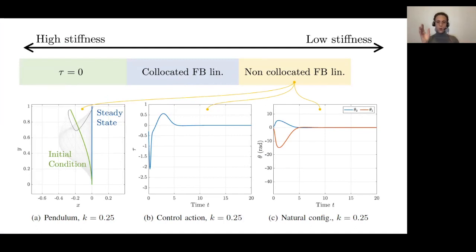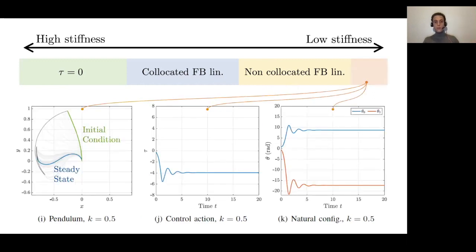For quite low stiffnesses, you cannot achieve stabilization with collocated feedback linearization, but you can still get stabilization with non-collocated feedback linearization. For very low stiffnesses, you de facto lose control authority on the non-actuated part of the robot, so there is no possibility of stabilizing the vertical configuration even with non-collocated feedback linearization.